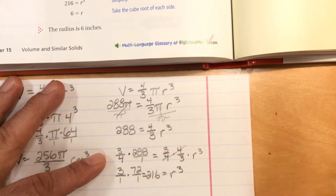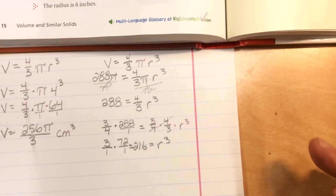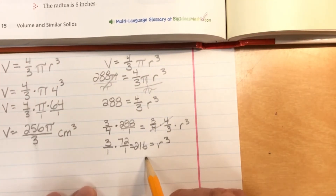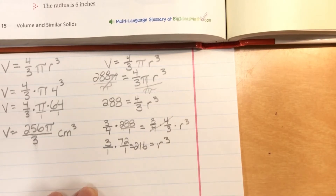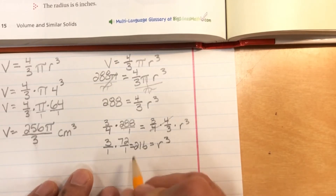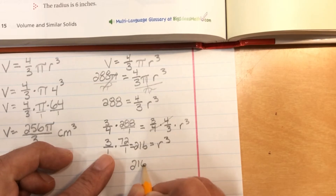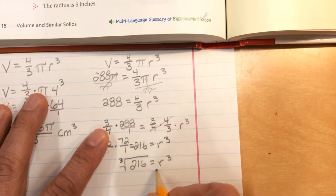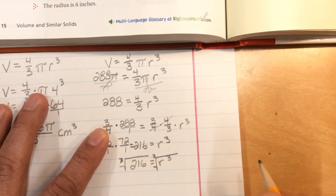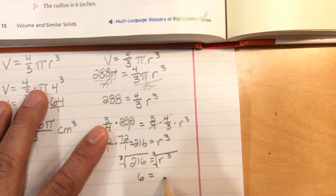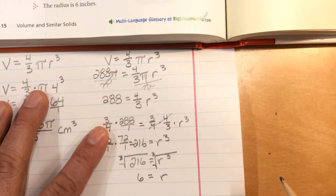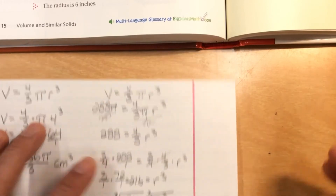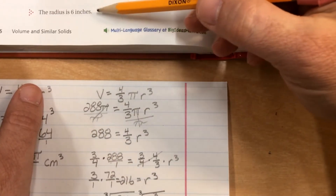So 216 equals r cubed. To solve, we take the cubed root of each side. Six times six equals 36, times 6 is 216, so the cubed root of 216 is 6. Therefore r equals 6 inches - the radius is 6 inches.